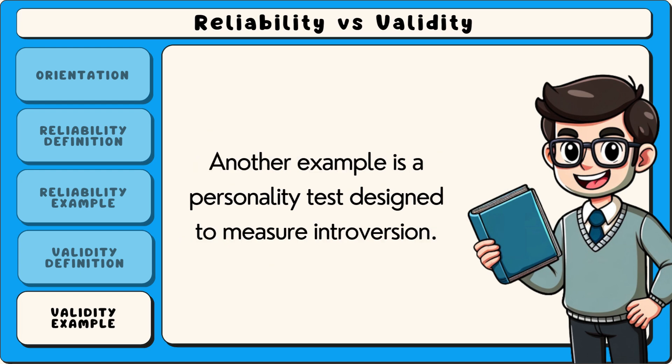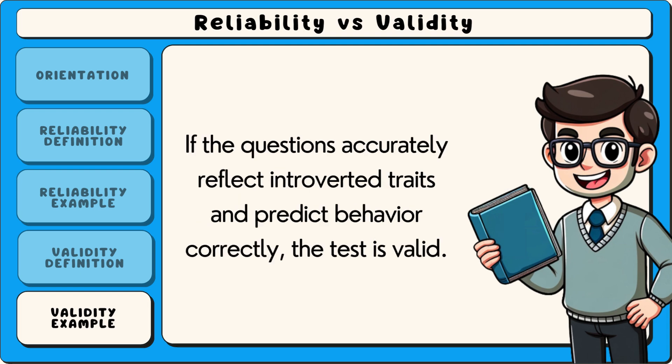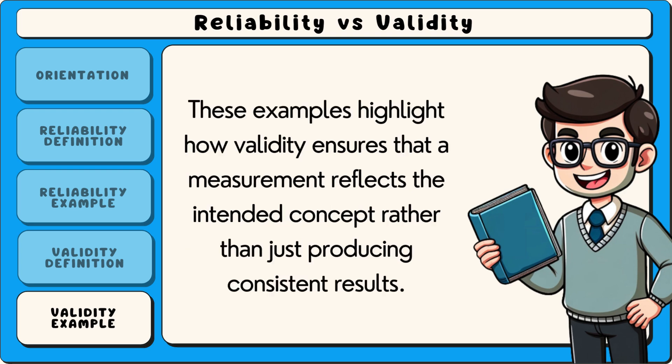Another example is a personality test designed to measure introversion. If the questions accurately reflect introverted traits and predict behaviour correctly, the test is valid. These examples highlight how validity ensures that a measurement reflects the intended concept, rather than just producing consistent results.